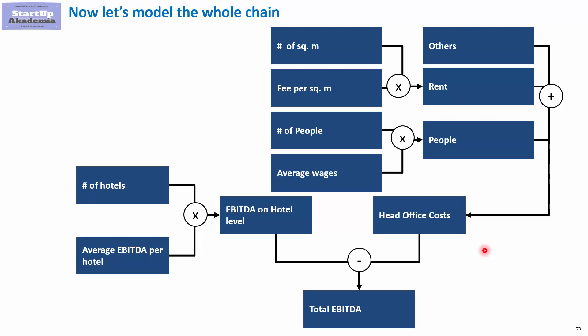As a summary: we started by modeling the margin after variable costs for one hotel, then accounted for fixed costs at hotel level to get EBITDA per hotel, and finally estimated head office costs using key drivers to get the total EBITDA for the chain. This is roughly what we'll do in Excel — using these drivers to reflect the logic of the business. Let's move to the case study where we will model a chain of hotels.